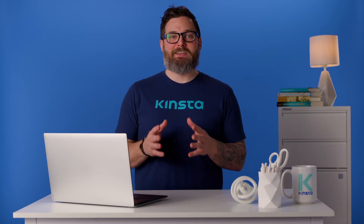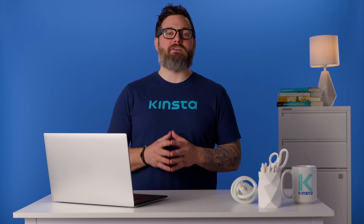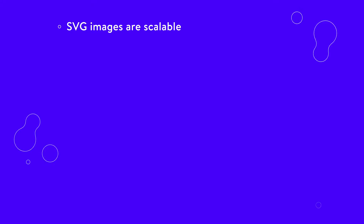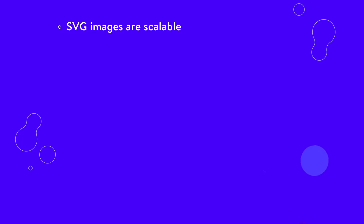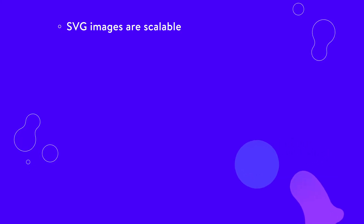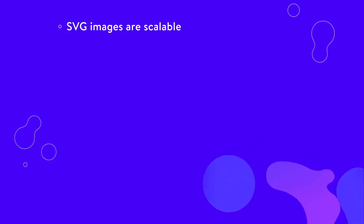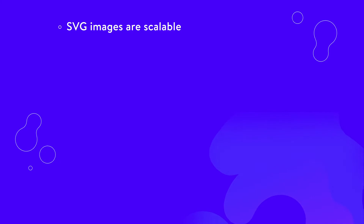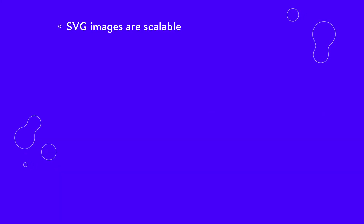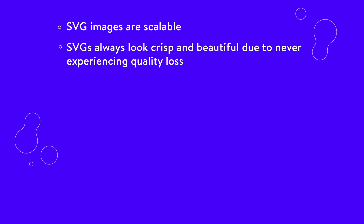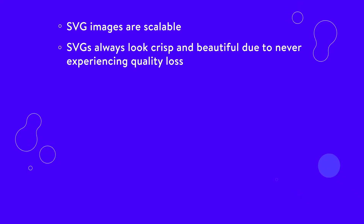Though still not as widely used as raster file types like PNG, vector graphics are growing fast in popularity — they do some essential tasks that raster images just can't. SVG images are scalable: you can design them to any resolution and they will size up or down without damaging quality or becoming pixelated. With raster images, you need to know what size you want from the beginning. SVGs always look crisp and beautiful due to never experiencing quality loss.